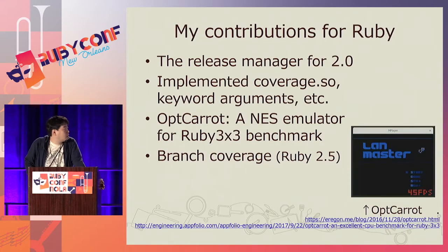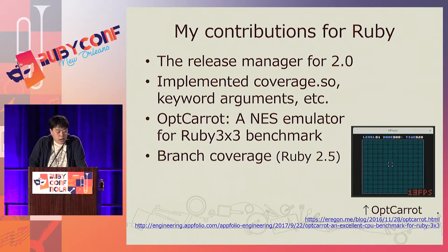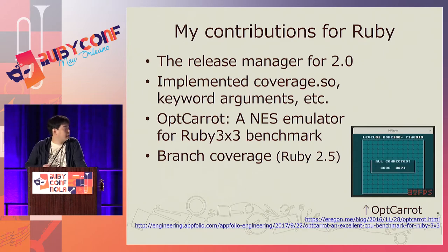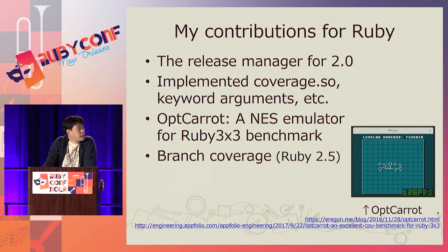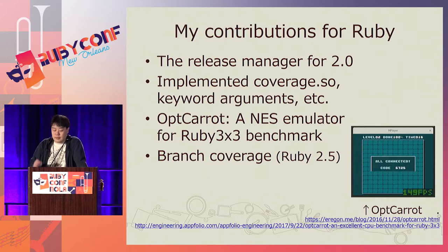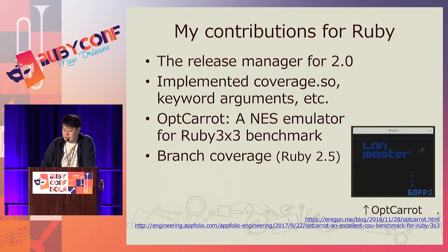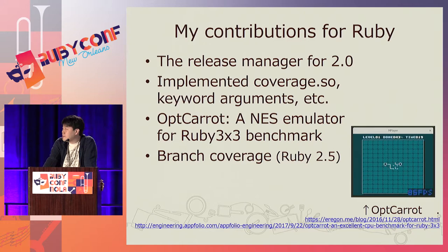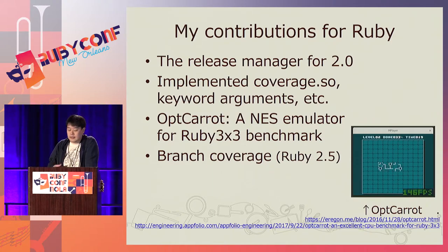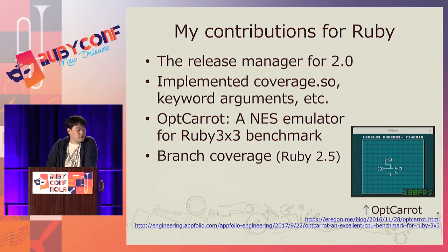Here are my contributions so far. I contributed to Ruby for 10 years. I was a release manager for Ruby 2.0, and I implemented some features including coverage, keyword arguments, and detection of encoding issues. My recent contribution is the development of a Ruby benchmark program called OptoCarrot, an emulator of Nintendo Entertainment System written in Ruby. I also improved coverage so that it now supports branch coverage, a feature included in Ruby 2.5.